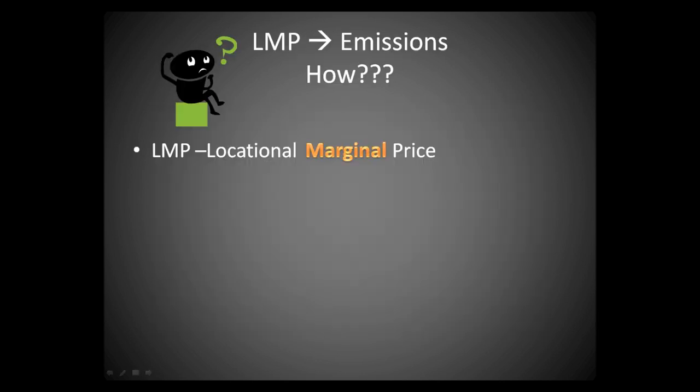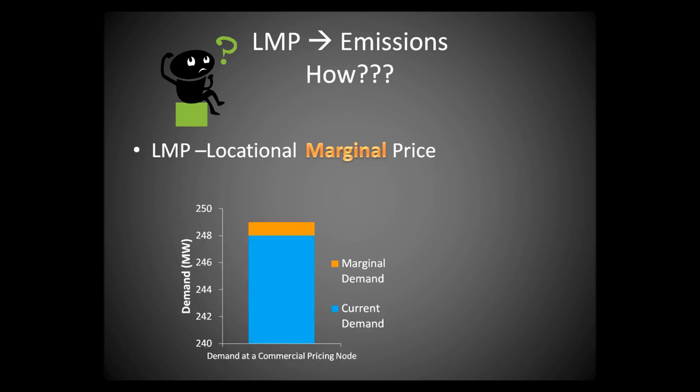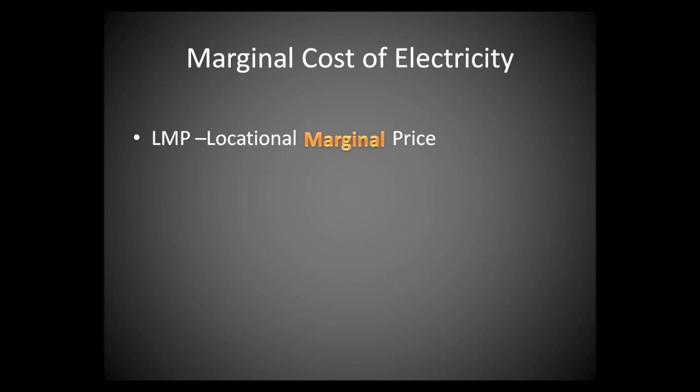How do we translate these LMPs to emissions? To answer that question, let's focus on the idea that LMPs are marginal. LMPs are marginal because they represent the marginal cost of electricity — the cost for producing the next incremental amount. For instance, if demand increased at a certain node by one megawatt, how much would it cost to generate and deliver that additional amount? LMPs represent the cost of such incremental changes in demand.